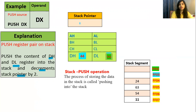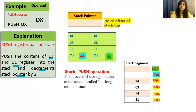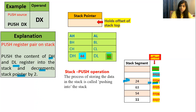What is the stack pointer? In the 8086, the stack pointer is in the execution unit. It is a 16-bit register and it holds the offset of the stack top. Since data is stored till this memory location, this becomes the stack top, and the stack pointer should hold FF04.